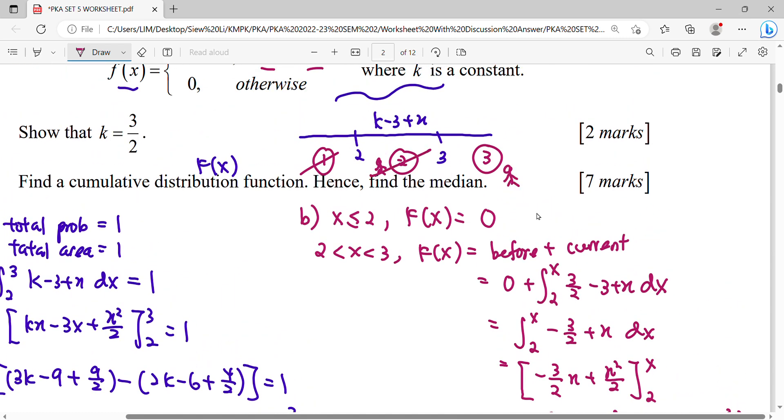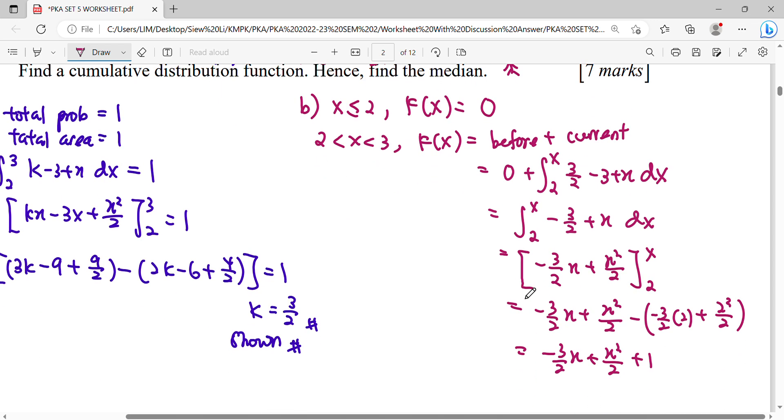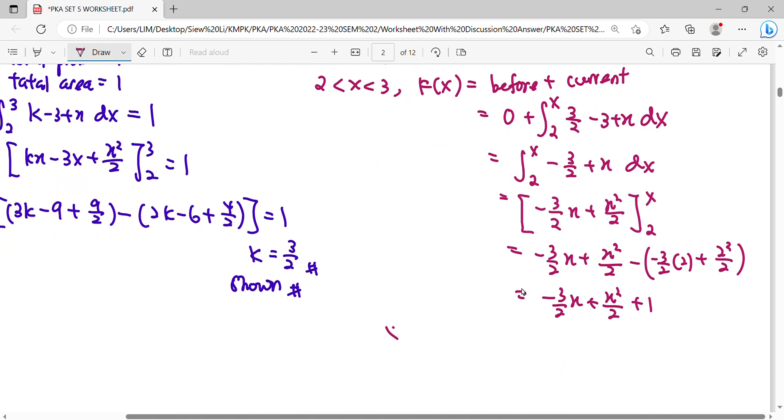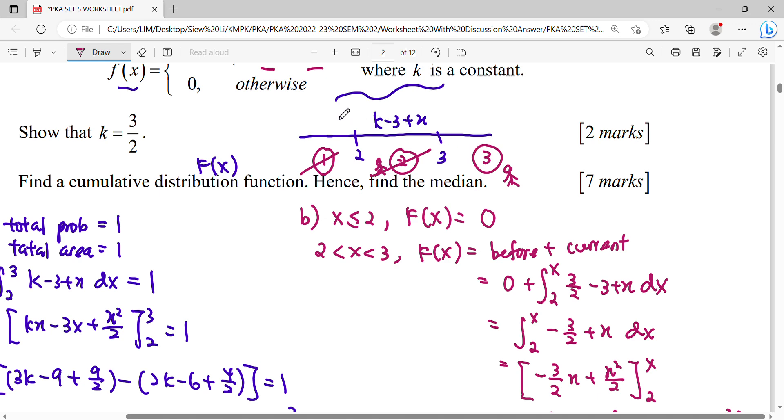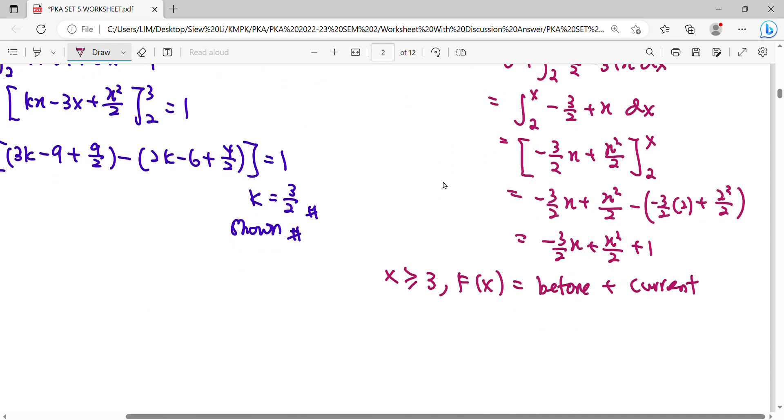So when you add here, you can see you are after 3. So your interval should be written X more than equal 3. So F besar. Same concept. Before interval plus current interval. So you can see before that, when you add this interval, before that, how many that have you accumulate? You have accumulated up to 3. So before that is accumulate up to 3. F besar tiga.